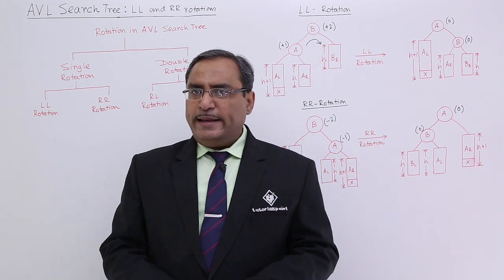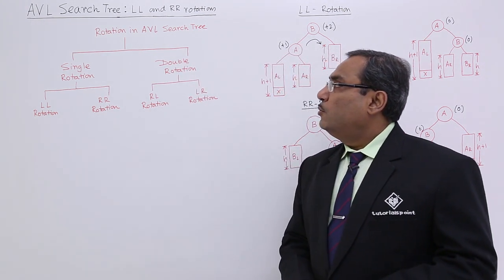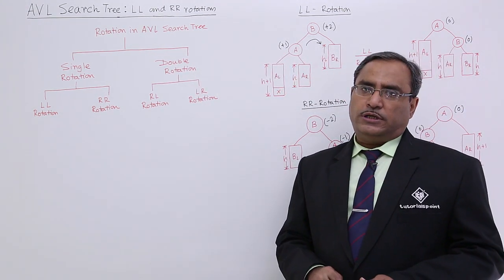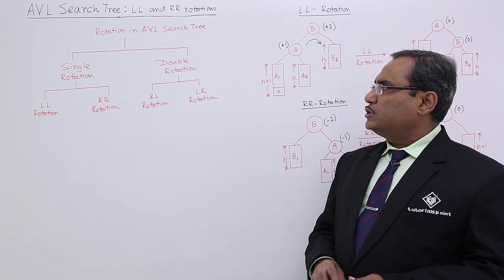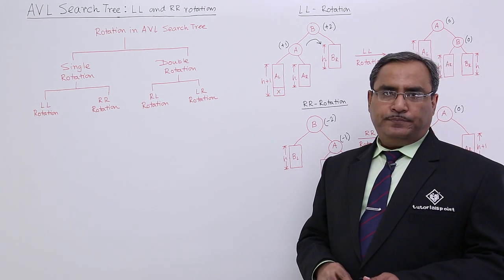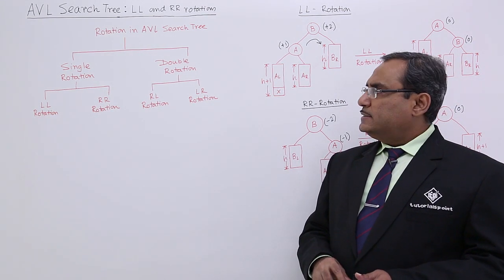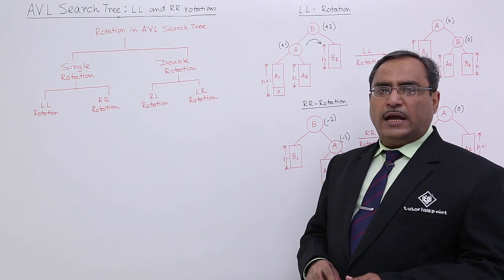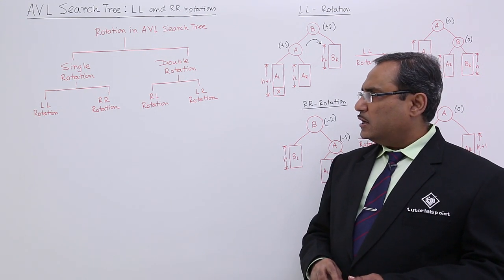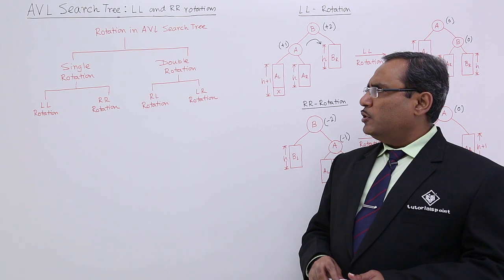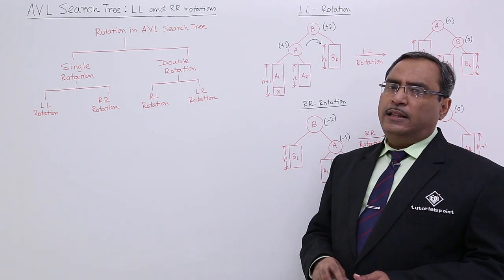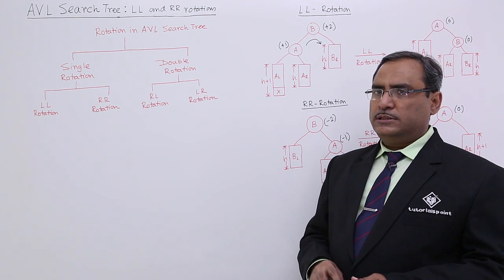In AVL search tree, we are having mainly two kinds of rotations. One is a single rotation, another one is a double rotation. Single rotation will be of two types: LL rotation and RR rotation, and double rotations will be of two types: RL and LR rotations.